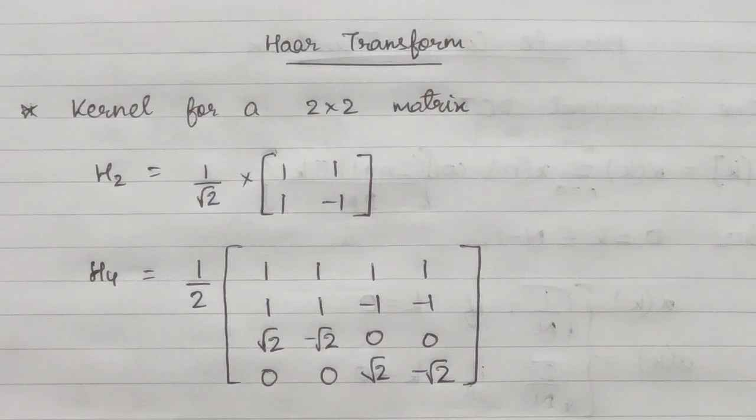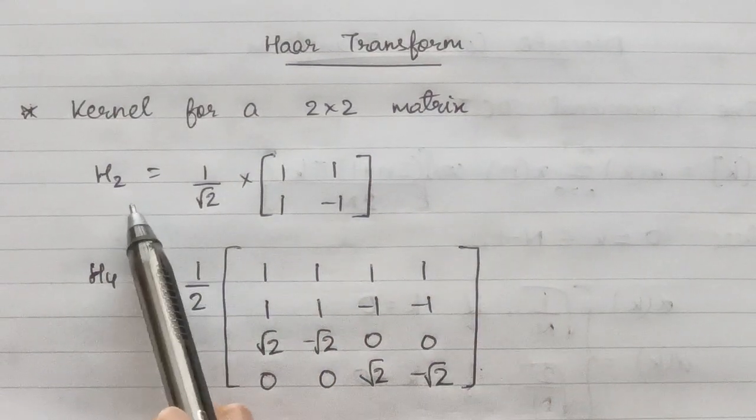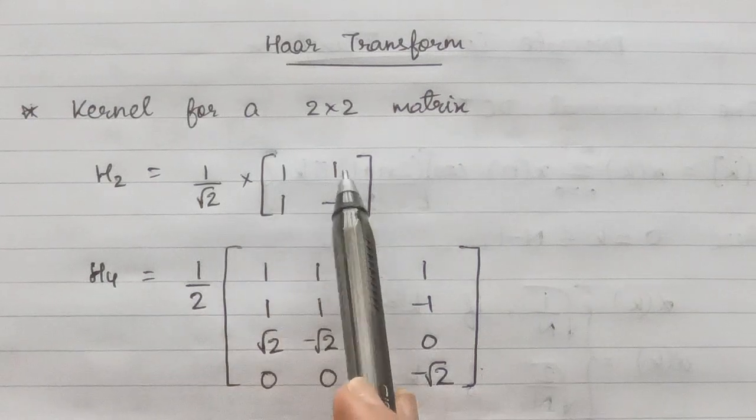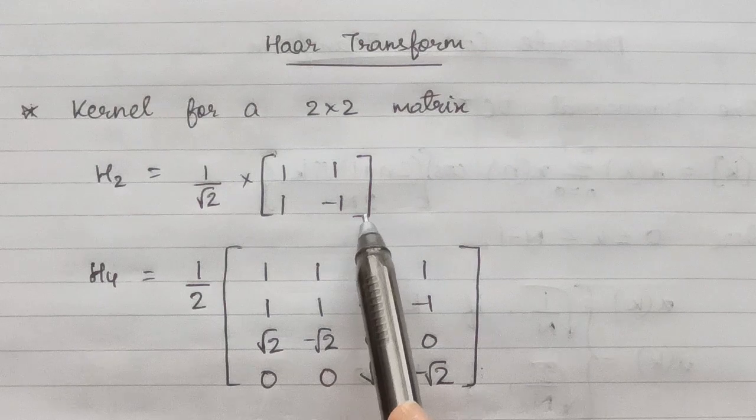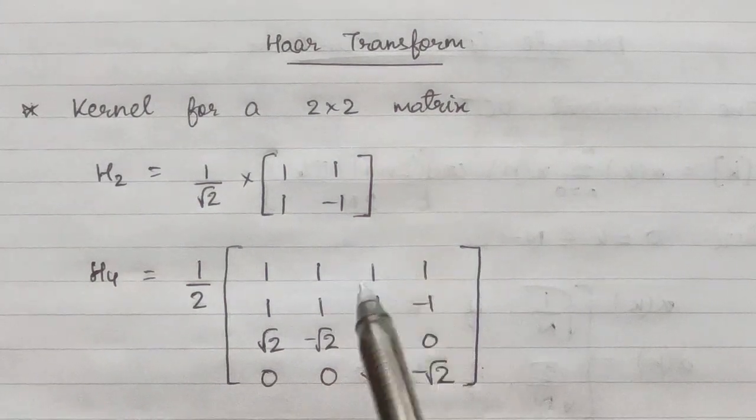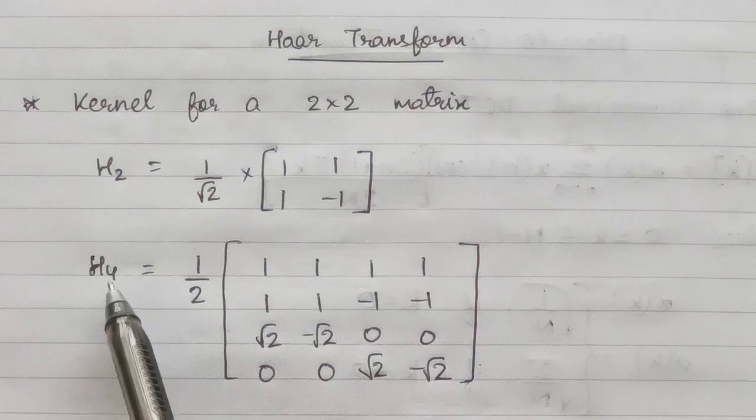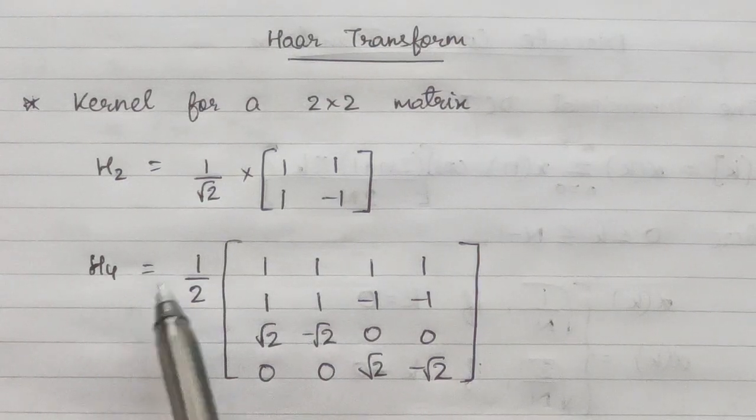Now that we've looked at the basic definition of Haar Transform, let's look at the kernel for it. The kernel for a 2×2 matrix is H₂ = (1/√2)[[1,1],[1,-1]]. This will mainly be useful for questions which involve a 2×2 matrix.